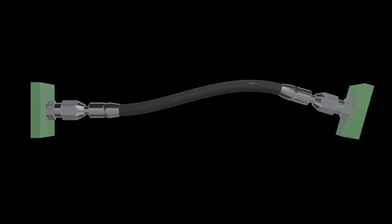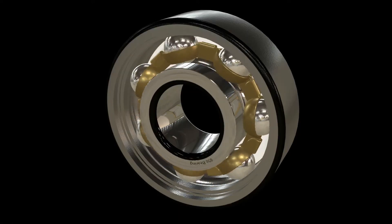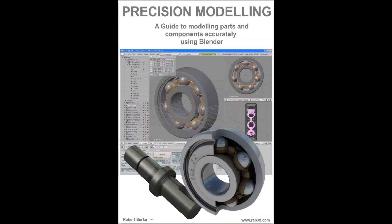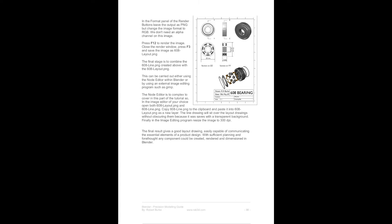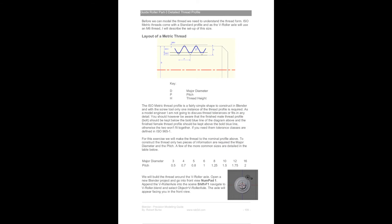Over the past years, to support the Blender community, I've produced a number of tutorials and released two books. Back in 2007 I released, free to the community, the Blender Precision Modeling Guide — this was for Blender 2.43 and adopted a 3D CAD-type workflow, showing readers how to model accurately. Over the years the book has probably been downloaded well over a million times, though it's now withdrawn, being completely out of date with Blender 2.9.